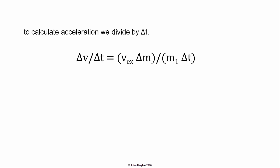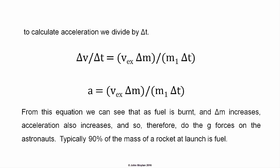So, delta V over delta T equals V subscript EX times delta M over M subscript 1 times delta T. And as delta V over delta T is acceleration, the acceleration of the rocket is equal to V subscript EX times delta M — the velocity of the exhaust multiplied by the mass of the exhaust — over the initial mass of the rocket multiplied by the elapsed time. As the fuel is burnt, that is, as delta M increases, the mass of the rocket — which is the initial mass of the rocket minus the mass of the exhaust, M subscript 1 minus delta M — decreases. So, as the fuel is burnt, the mass of the rocket decreases.